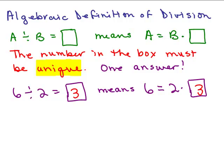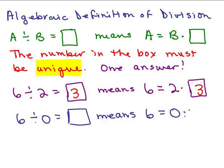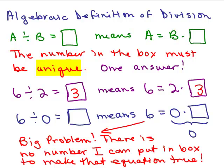What if we were trying to divide by zero? Instead of six divided by two, what if I tried to do six divided by zero? I'm trying to find the answer to six divided by zero, and that would mean six is equal to zero times whatever would go in the box. Zero times whatever's in the box — what could I put in the box so that when I multiply it times zero, I get six? Zero times anything is always going to be zero. It doesn't matter what I put in that box — the right-hand side will always be zero, and it's never going to equal six. There is no number I could put in the box to make this equation true.